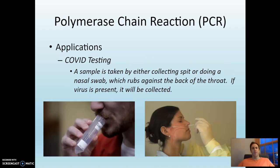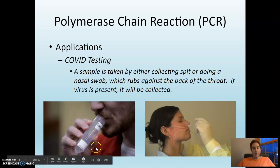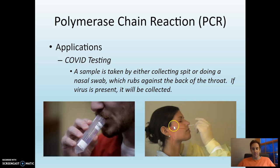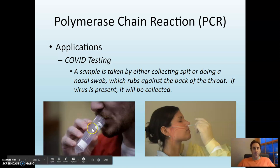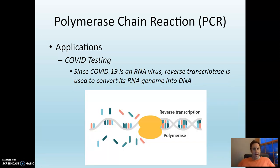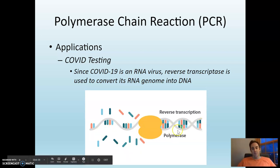Here's a relevant example for 2020: COVID testing. PCR is actually used for COVID testing. You give a sample either by spitting into a tube or by nasal swab, where they scrape the back of your nasal cavity — not a pleasant experience. They get a little bit of virus particles from the saliva or nasal cavity and need to make many copies. The first problem, though, is that since COVID-19 is an RNA virus, we have to convert that single-stranded RNA into double-stranded DNA using the enzyme reverse transcriptase.